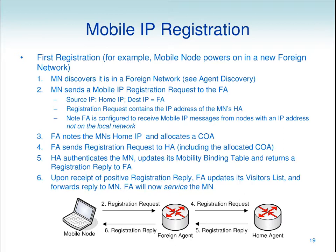My mobile node sends a special message called a registration request to the foreign agent — from mobile node to foreign agent. It tells the foreign agent what my home IP address is. It's a registration request because I want to register back to my home agent. The registration request contains the IP address of the home agent. The foreign agent makes note of the mobile node's home IP address and records it in some data structure.